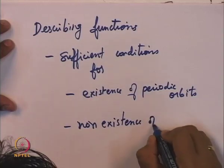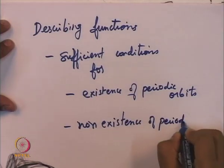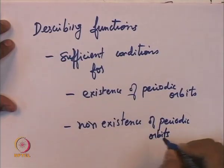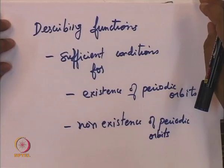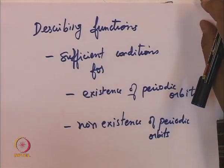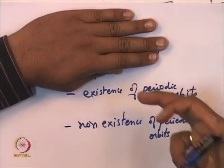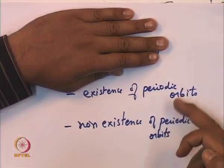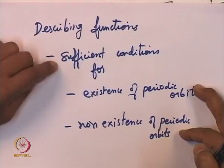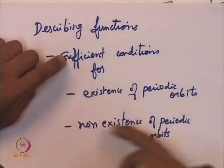One thing to note is that in nonlinear dynamical systems and nonlinear control, it is very hard to have necessary and sufficient conditions. Even the Lipschitz condition we saw for existence of solutions to differential equations was only a sufficient condition — solutions can exist even when the Lipschitz condition is not satisfied. Here also, existence and non-existence of periodic orbits seem like opposites, but we only have sufficient conditions for each.